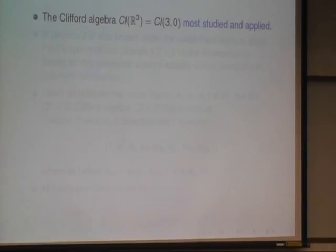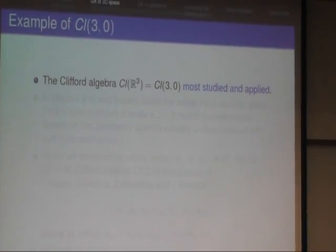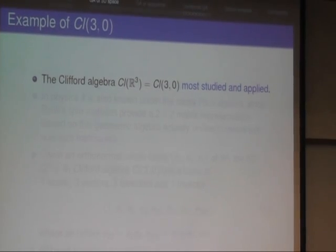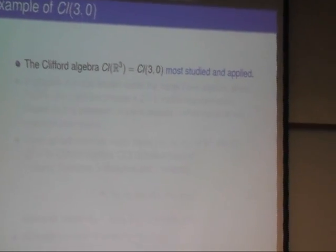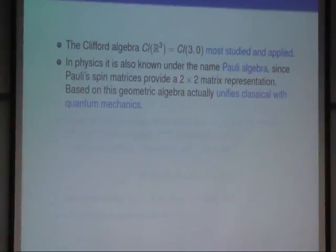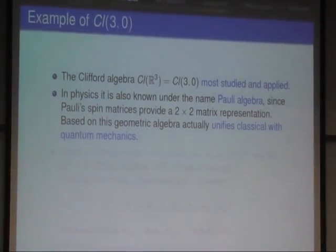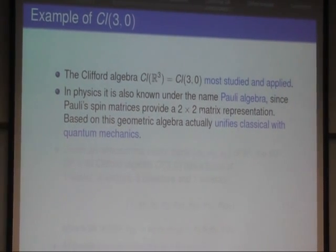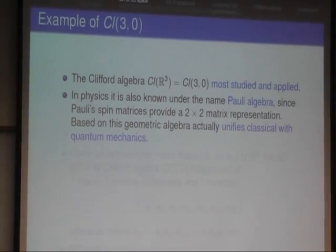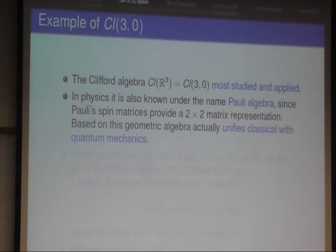Now let's go one dimension up to three-dimensional space and the Clifford algebra or geometric algebra of three-dimensional space. In physics, this is also known as the Pauli algebra and it can be represented with two-by-two matrices. And so you see these matrices play a fundamental role in quantum physics. So already you see how this approach can unify classical physics with vectors and quantum mechanics.